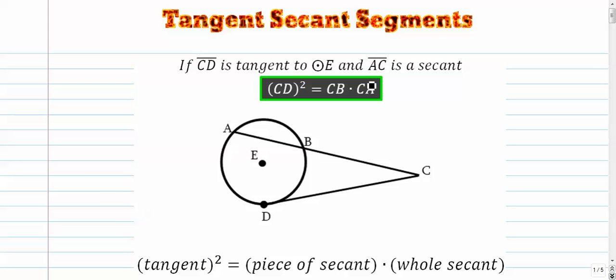Alright, last one in our tangent set of four videos here: tangent secant segments. So here we go, we've got ourselves a tangent segment CD and the secant segment AC. And the rule here is that we're going to take this tangent and square it. Take the tangent and multiply it by itself. Set that equal to the small piece of the secant times the whole secant.